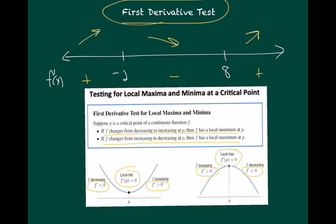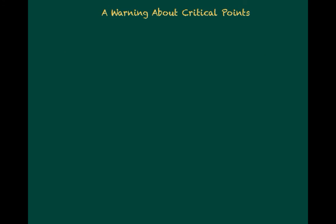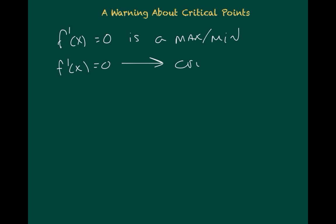There's a lot of information in this video. We'll get more practice tomorrow in class finding lots of maxes and mins and applying the first derivative test. But before I leave you, let me go back to that warning from the introduction. It's really easy to think that anywhere the derivative is equal to zero is a max or a min — but that's just not true. When f prime of x equals zero, that just means it's a critical point, but not all critical points are maxes or mins.